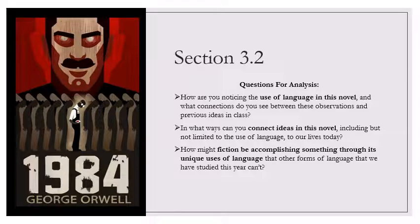You believe that reality is something objective, external, existing in its own right. You also believe that the nature of reality is self-evident. When you delude yourself into thinking that you see something, you assume that everyone else sees the same thing as you. But I tell you, Winston, that reality is not external. Reality exists in the human mind, nowhere else. Not in the individual mind, which can make mistakes, and in any case soon perishes. Only in the mind of the party, which is collective and immortal. Whatever the party holds to be truth is truth. It is impossible to see reality except looking through the eyes of the party. That is the fact that you have got to relearn, Winston. It needs an act of self-destruction, an effort of the will. You must humble yourself before you can become sane.